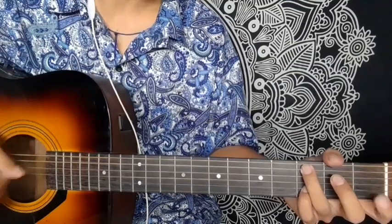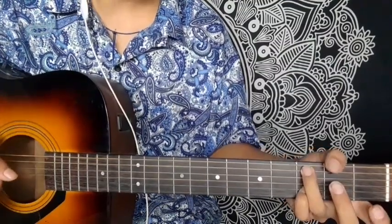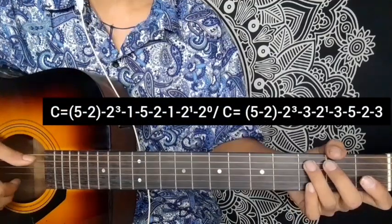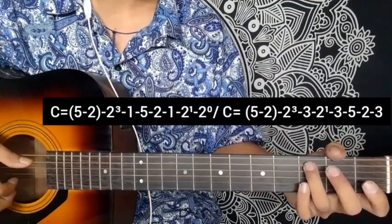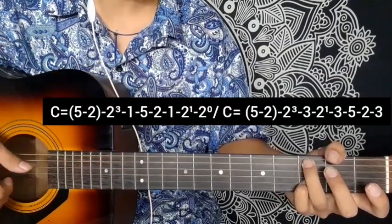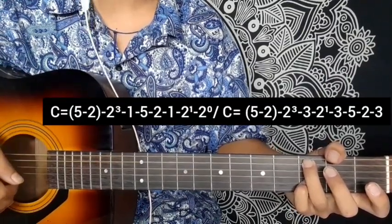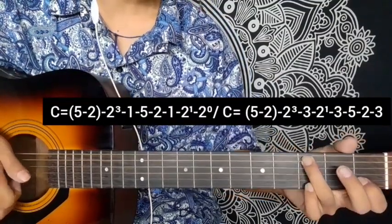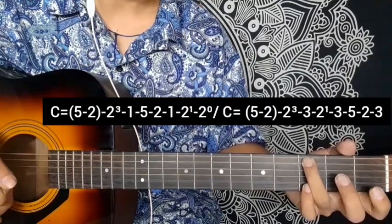After the middle section, it's the same: fifth string, 5-2, pick second string open, press second string first, then first string open, press first string second, then open.